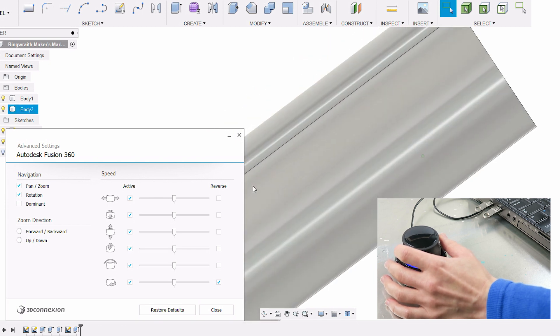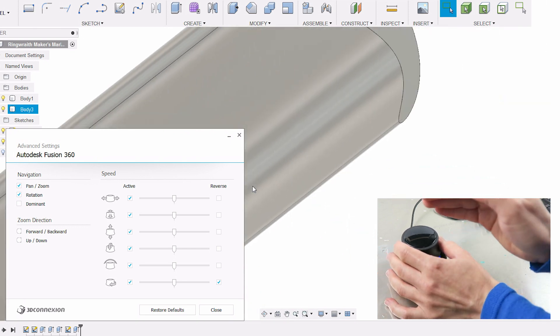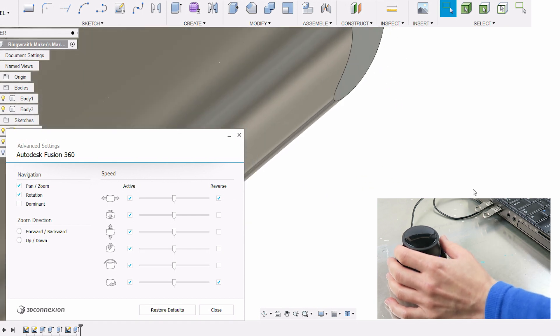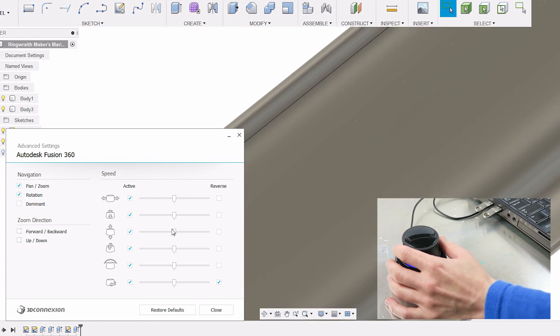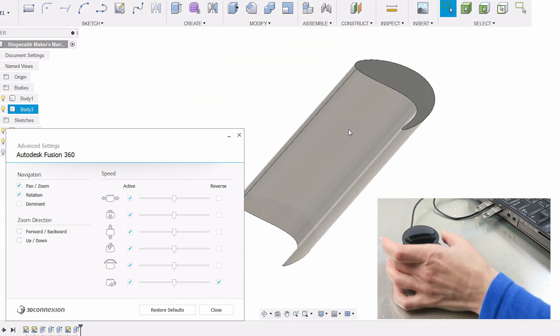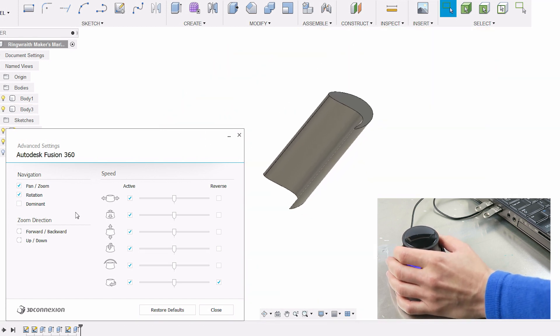So in the advanced settings menu here, you can see each of the different motions that this device is capable of and you can change what direction means what basically. For example, right now, left and right moves the piece to the right, if I press this way, moves the piece to the left, if I press this way, but I can reverse that. So now if I push that way, it's like it's moving the camera that way. And then I'm just going to put that back because that's not how I normally work. You can also change zooming in and out, whether it's forward or backward, up and down. I changed it, so pushing down zooms me in, pulling up zooms me out. But you have those options here in this menu. And the options are different depending on what program you're in.